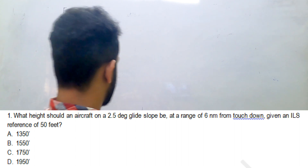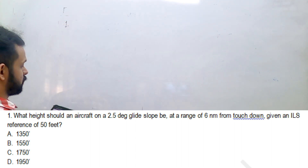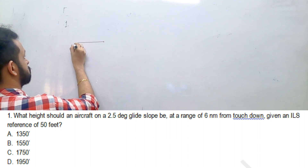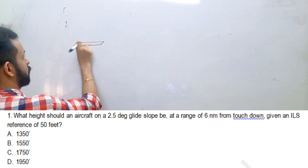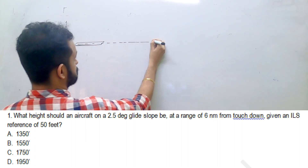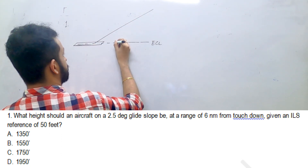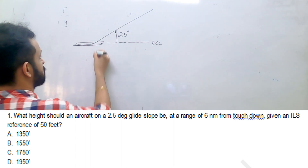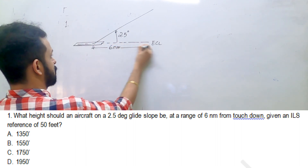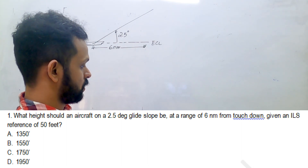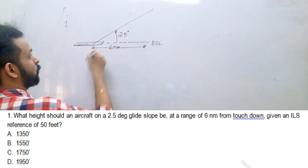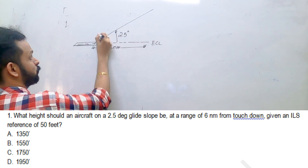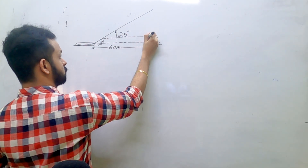So we're asked to find the height of a particular aircraft — question number one — an aircraft on a 2.5 degree glide slope. Let's draw the runway and the aircraft on the 2.5 degree glide slope along the extended centerline. The glide slope is 2.5 degrees, and the range is six nautical miles from touchdown. The ILS reference height of 50 feet is at the intersection point of the centerline with the threshold on the slope — that's right here.